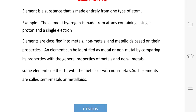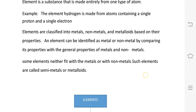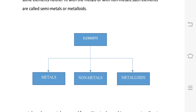Based on the properties, elements are classified. If an element has properties between metals and non-metals, it is called a semi-metal or metalloid. Metals and non-metals are the general classifications based on their properties.